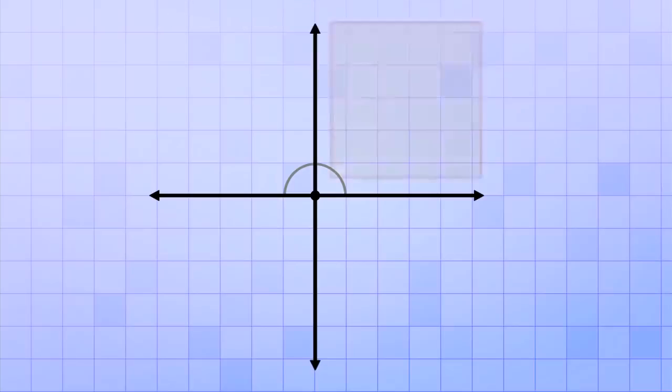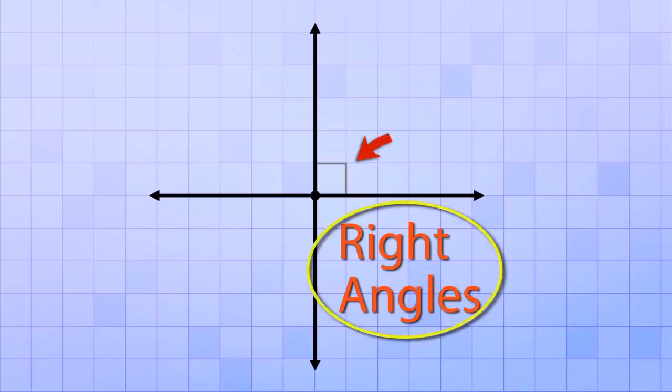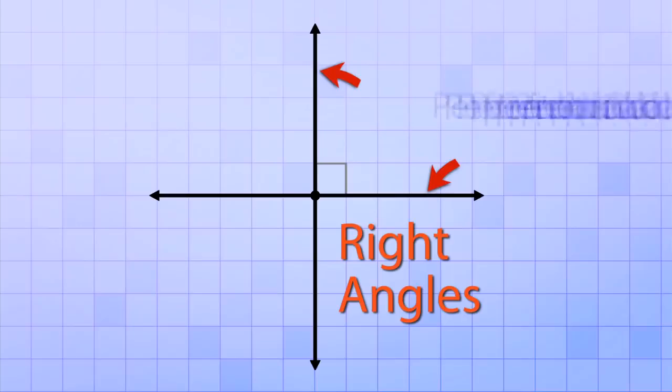Perpendicular lines are lines that form square corners when they intersect, and these square corner angles have a special name in geometry because they're really important. We call them right angles. There's even a special symbol that we use to show when an angle is a right angle. Because they form square corners, we use a little square instead of the arc that we use for the other angles. So whenever you see this symbol, you know that the angle you're looking at is a right angle, and that the lines that form it are perpendicular.